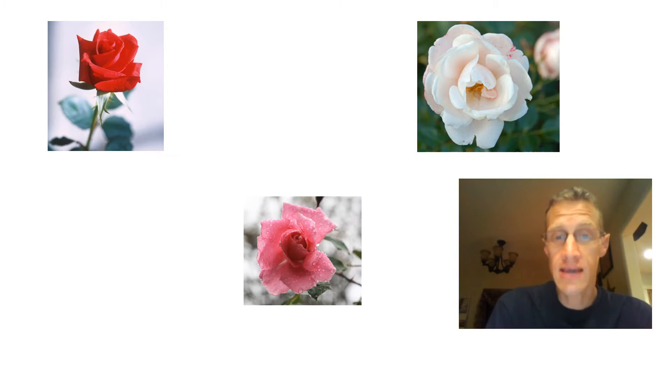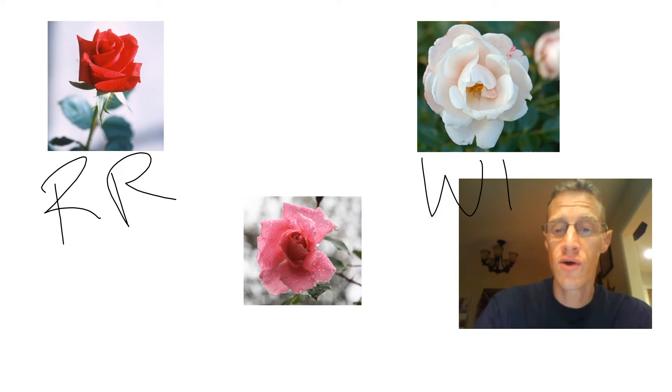For our first example of non-Mendelian inheritance, let's take a look at roses. If we mate this red rose with this white rose, what we get is all pink. That's right, all pink. And the reason behind this is actually quite simple. The red roses have two copies of a gene for red pigment. And the white roses have two copies of a mutation that makes no pigment at all.